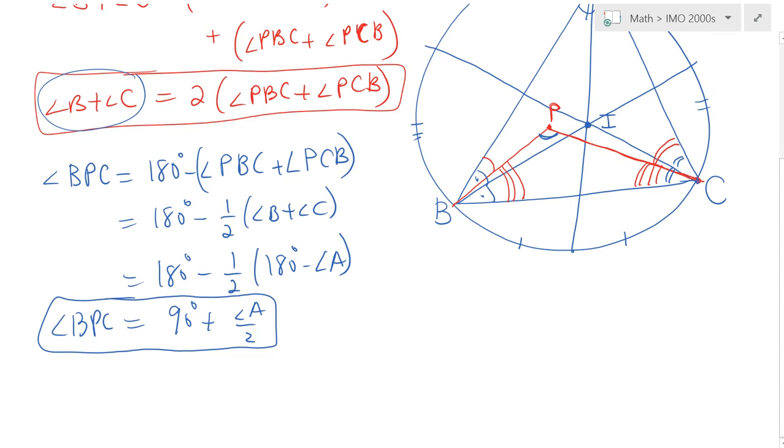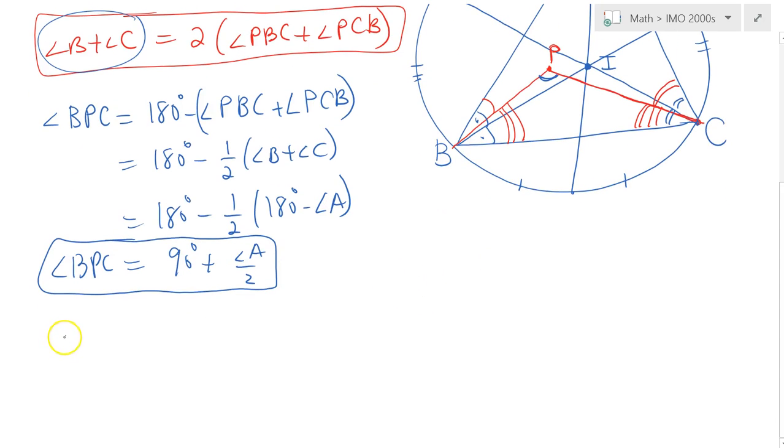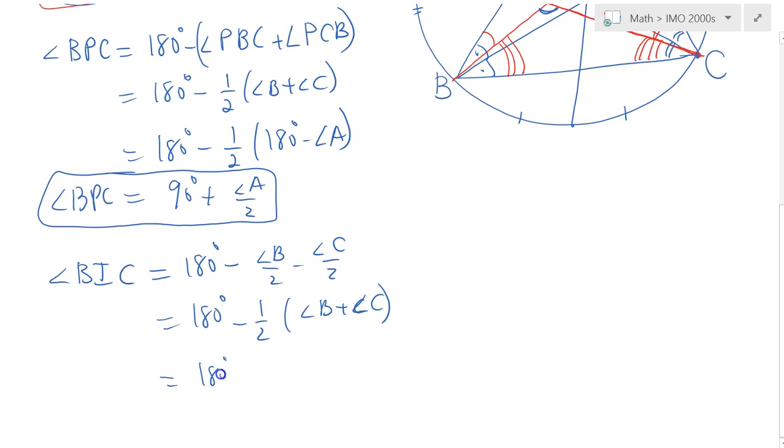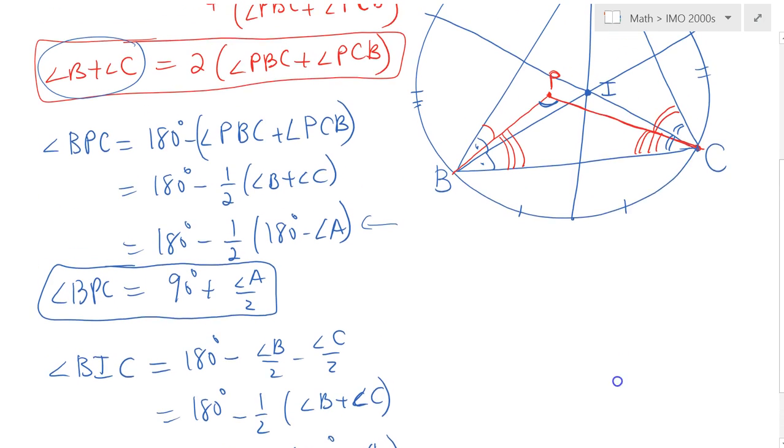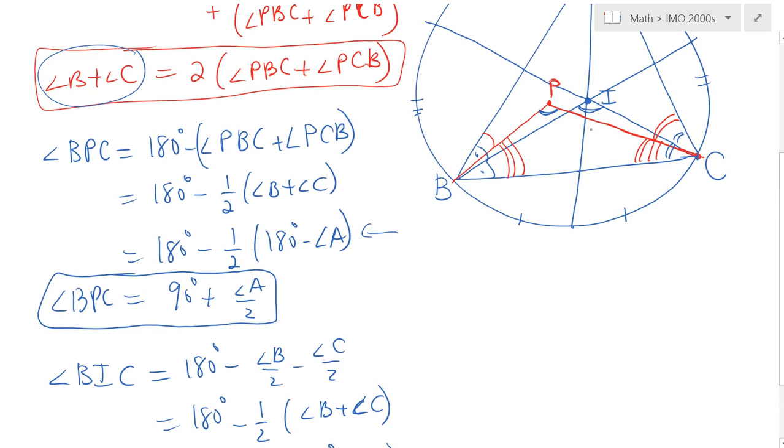That's the degree measure of angle BPC. In a similar way, it's possible to calculate angle BIC. Angle BIC is simply equal to 180 degrees minus angle B over two minus angle C over two. This would simply be equal to 180 minus one half angle B plus angle C, but that's simply 180 degrees minus one half times 180 degrees minus angle A. That's simply 90 degrees plus angle A over two.